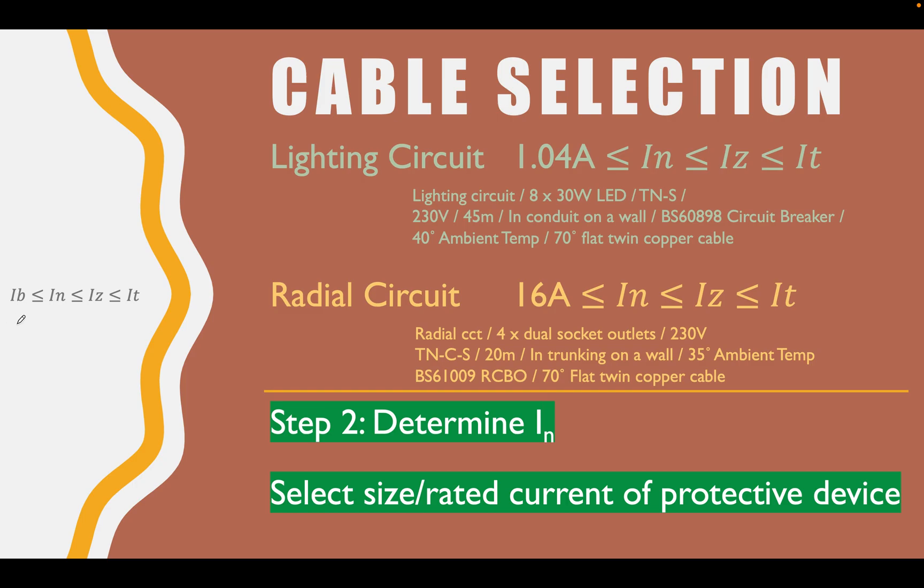Let's quickly remind ourselves what the parts of these processes are. Our IB is our design current, that was step 1. Our IN is the size of our protective device or the rated current of our protective device. IZ is the current carrying capacity of the cable in the installed conditions, and the IT is the tabulated value of the current carrying capacity of that cable.